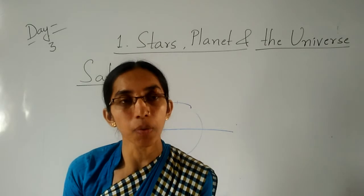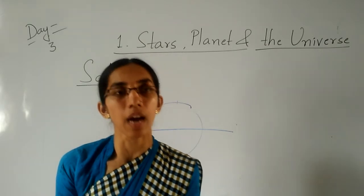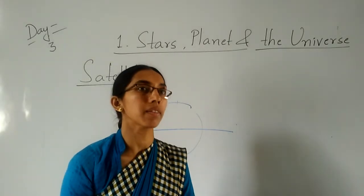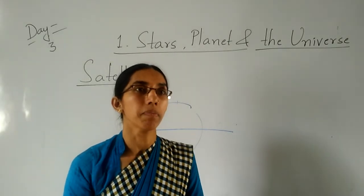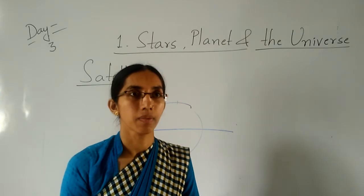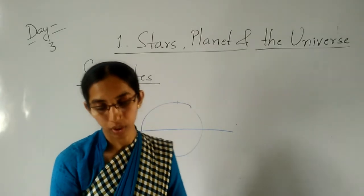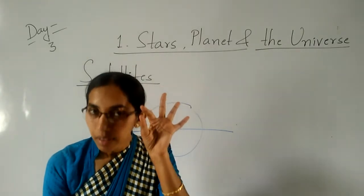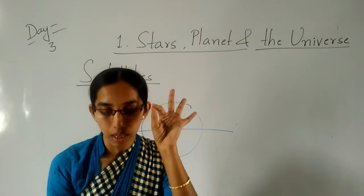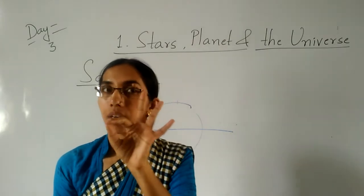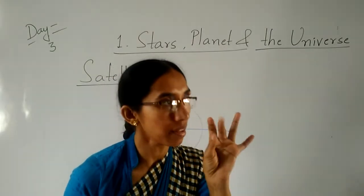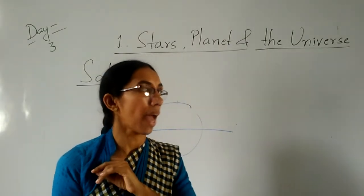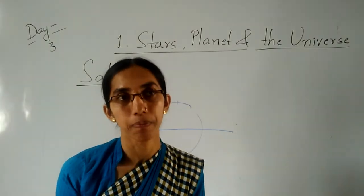Which planets are called the gas giant planets? Jupiter, Saturn, Uranus, and Neptune are the gas giant planets.